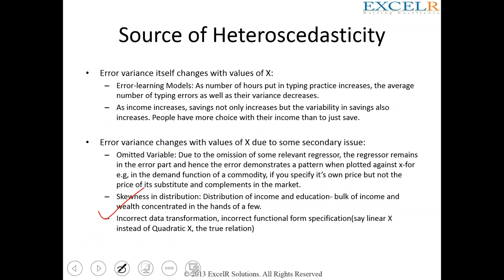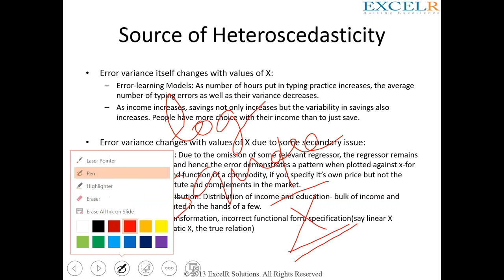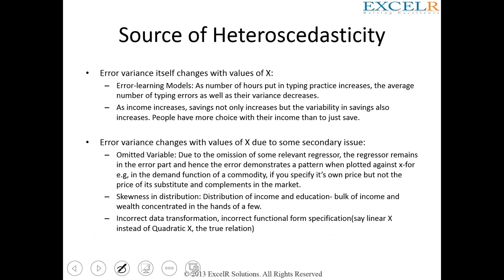Incorrect data transformation and incorrect functional form or specification are also reasons for heteroscedasticity. For example, you should have applied a log transformation but instead used a reciprocal or square transformation. Inappropriate transformation of the data can also result in heteroscedasticity.